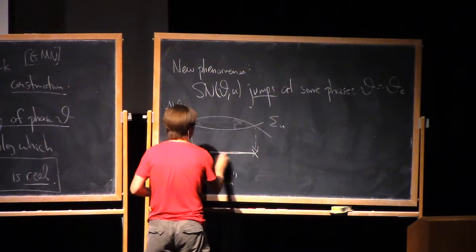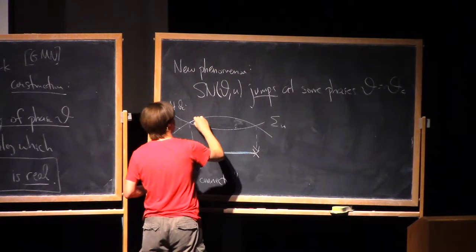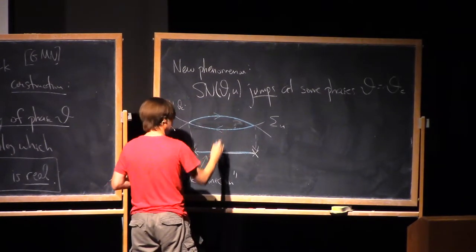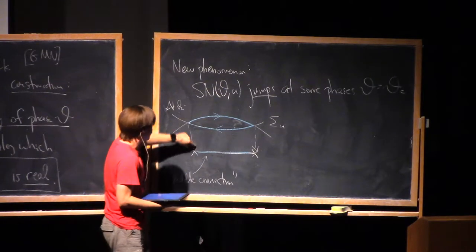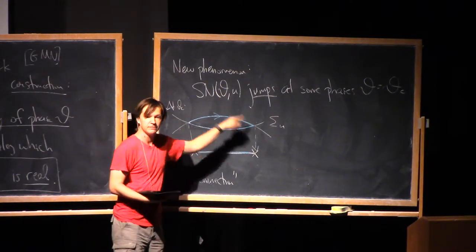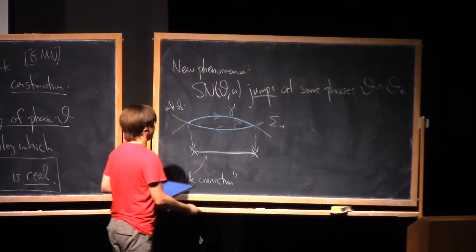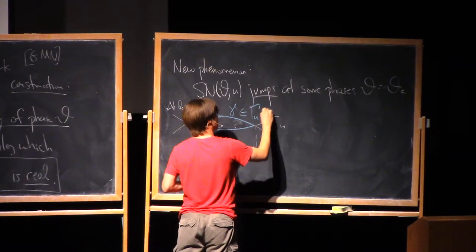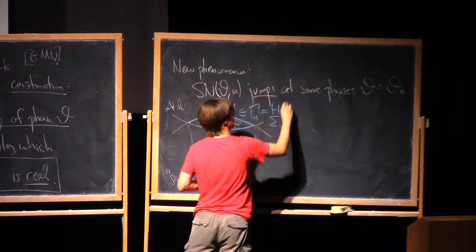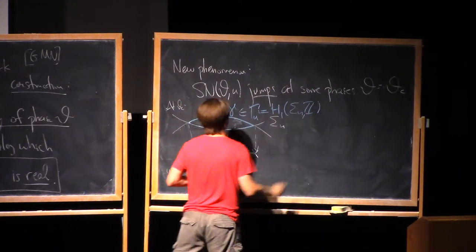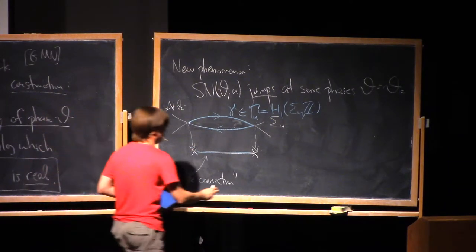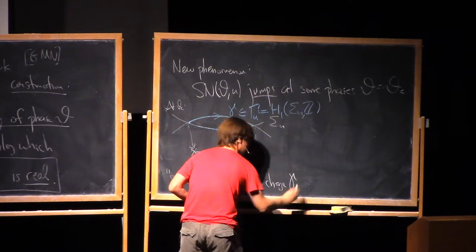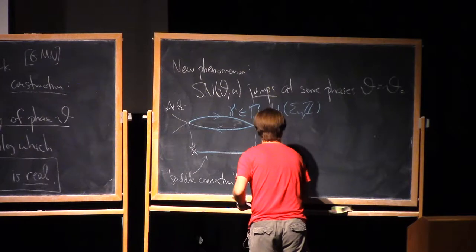So associated to this saddle connection, there's a very natural homology class up here. Namely, I just take the saddle connection, and I lift it up to the cover in both possible ways with opposite orientation. There's some way of fixing the orientation. And exactly because these are branched points, this thing will be a closed cycle. And I'll call that cycle gamma. It lies in the lattice capital gamma sub u, which by definition is the first homology of the spectral curve. We'll call it a saddle connection with charge gamma.